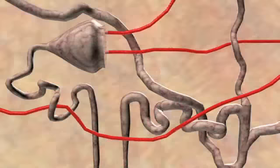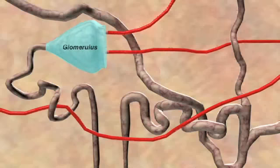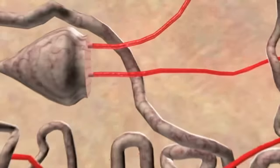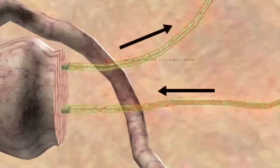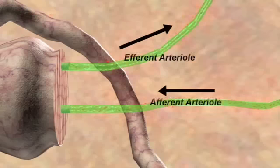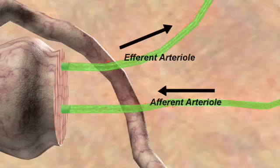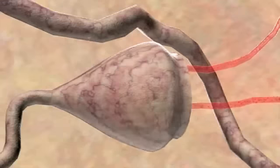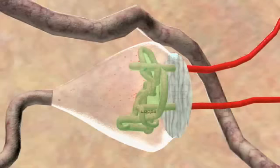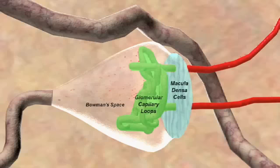The nephron is a tubular structure similar to a porous pipe or hose. The glomerulus serves as the starting point for the flow through the nephron. The blood enters the glomerulus through the afferent arteriole and exits through the efferent arteriole. The glomerulus is where the blood supply is filtered by osmosis and diffusion.